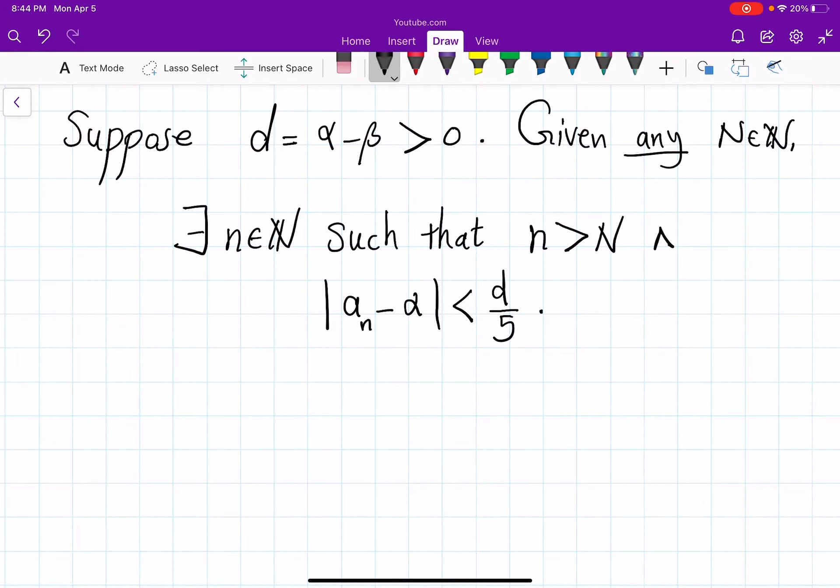Now that fix one such n and find which is again possible because your sequence will visit your liminf even after this particular little n so m in natural numbers such that